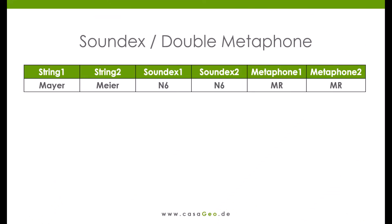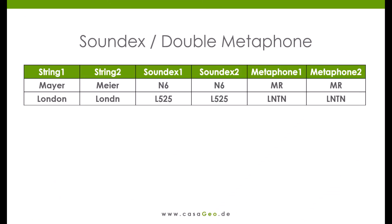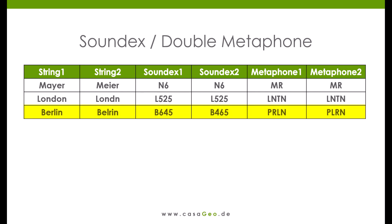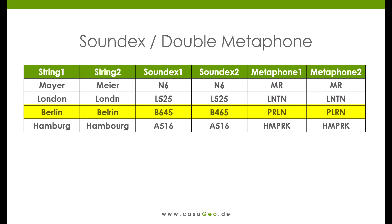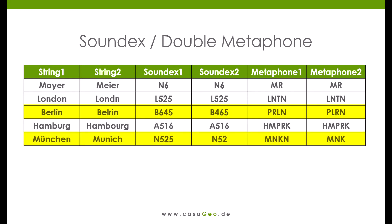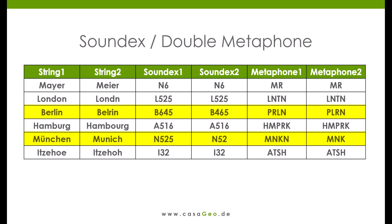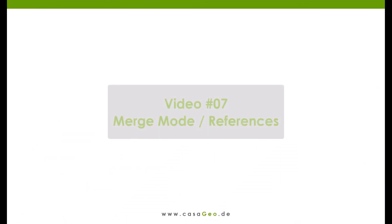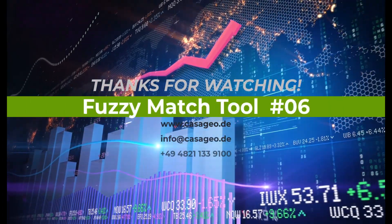We have seen two examples where the pairs of terms are similar but are sorted out before they can be compared. Soundex and Double Metaphone are good and helpful algorithms for matching similar words; however, we want to point out the risks of not recognizing similar terms under certain conditions, especially if they are non-English words. In the next video we will look at the merge mode and an advanced option. Thank you for your time — we are happy to support you in the area of data science and location intelligence.